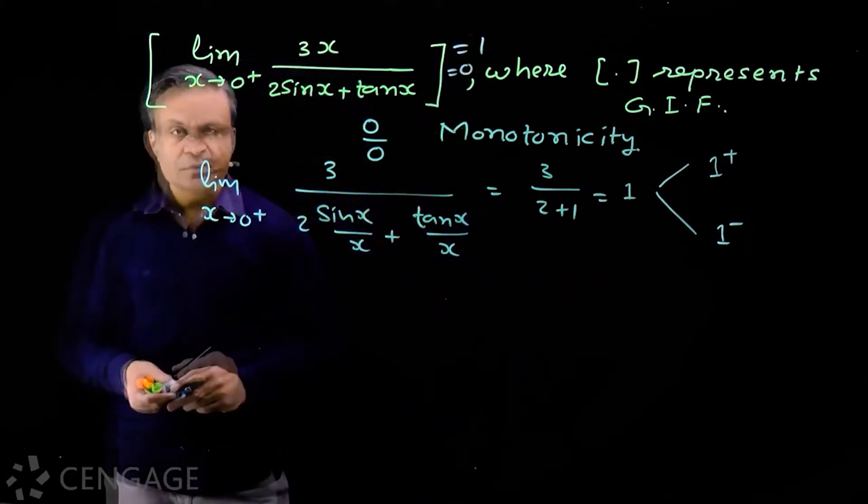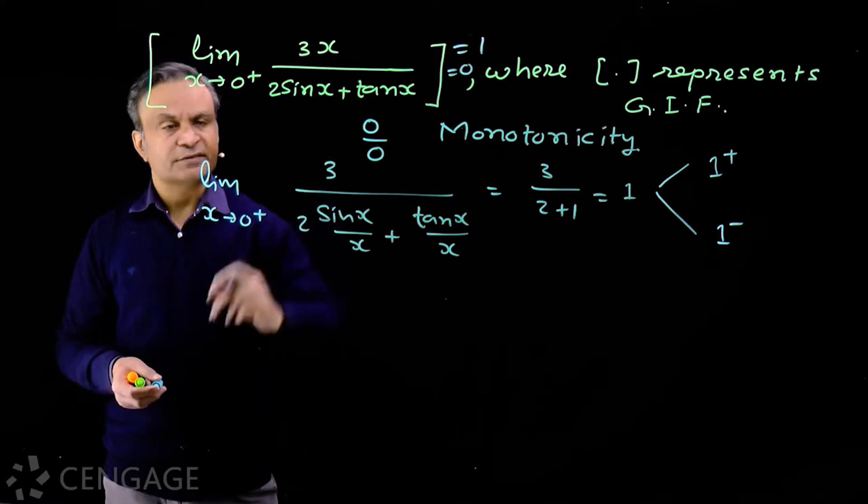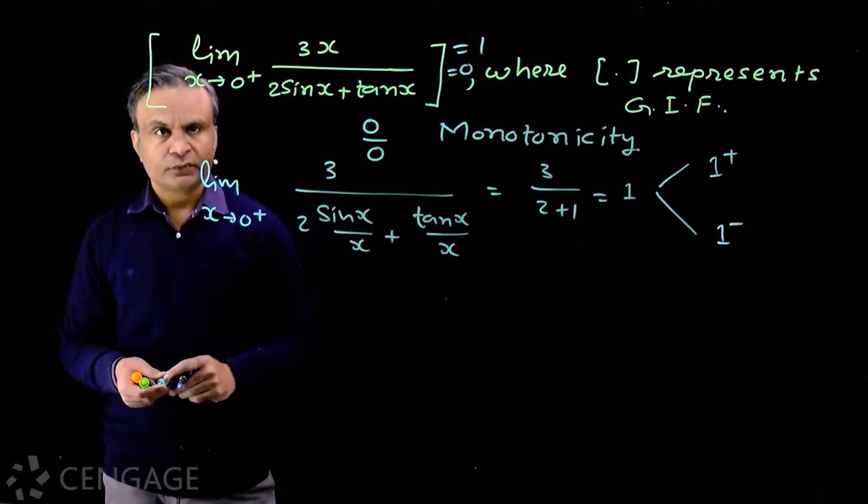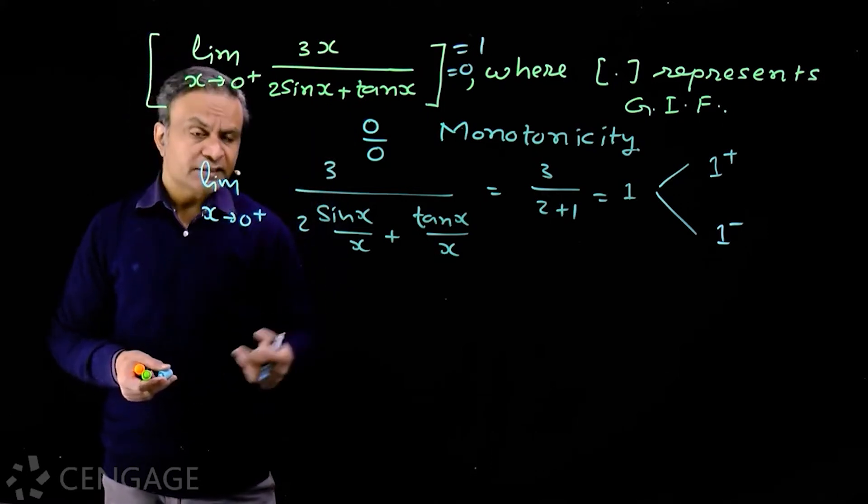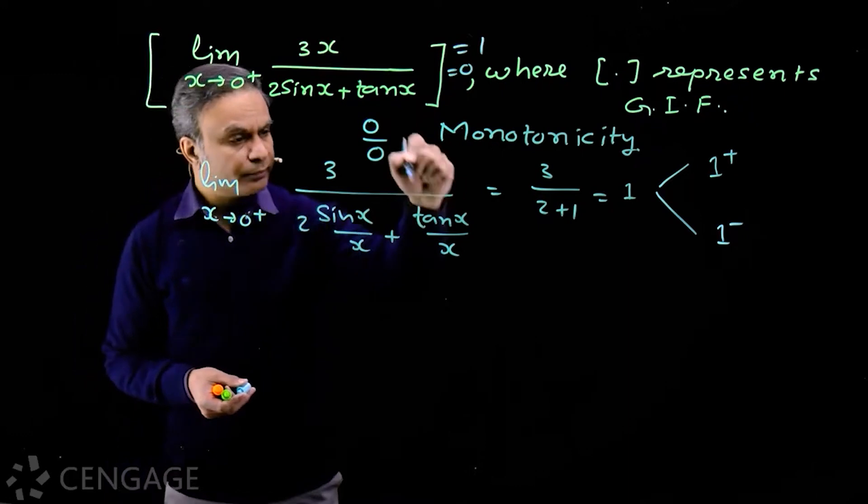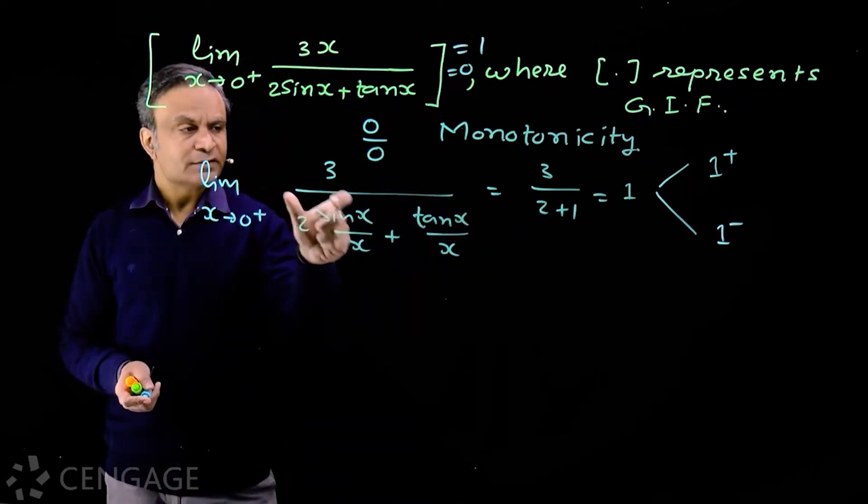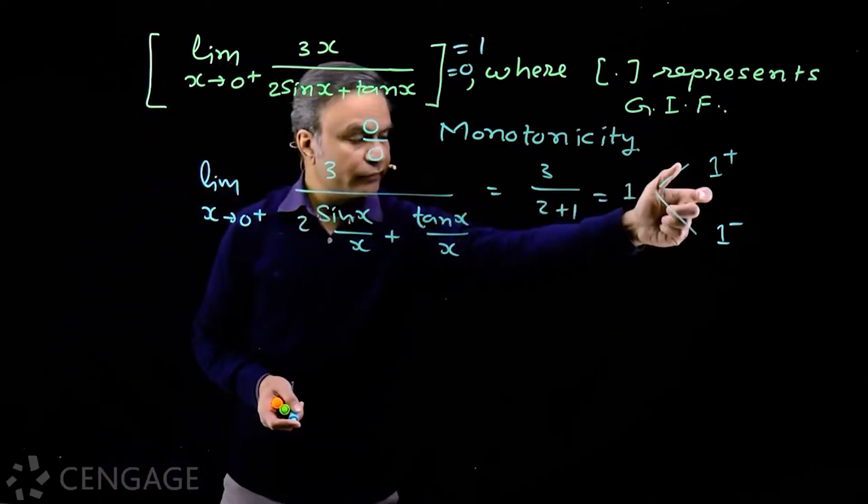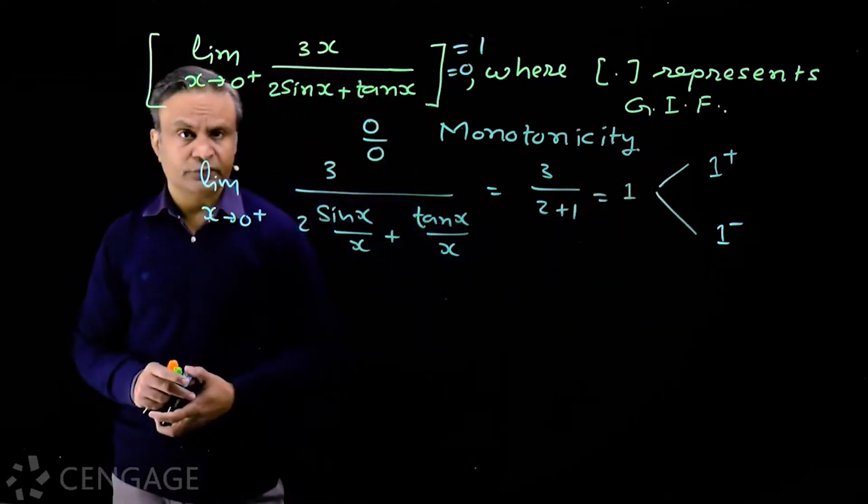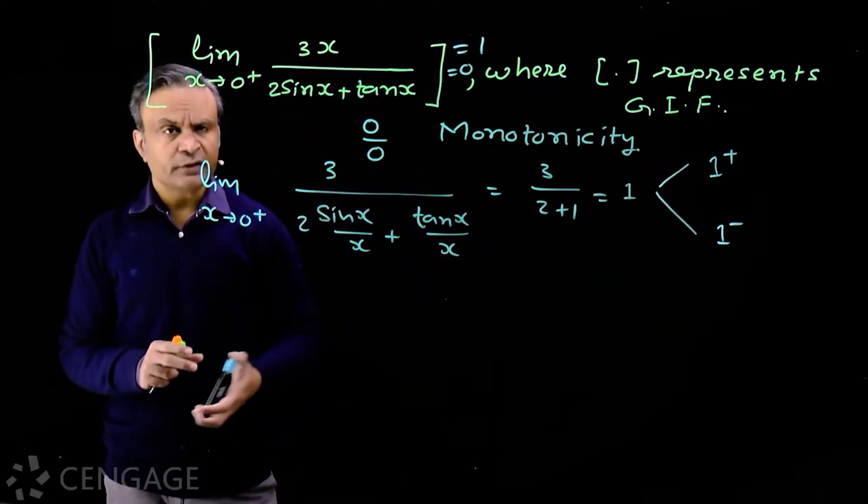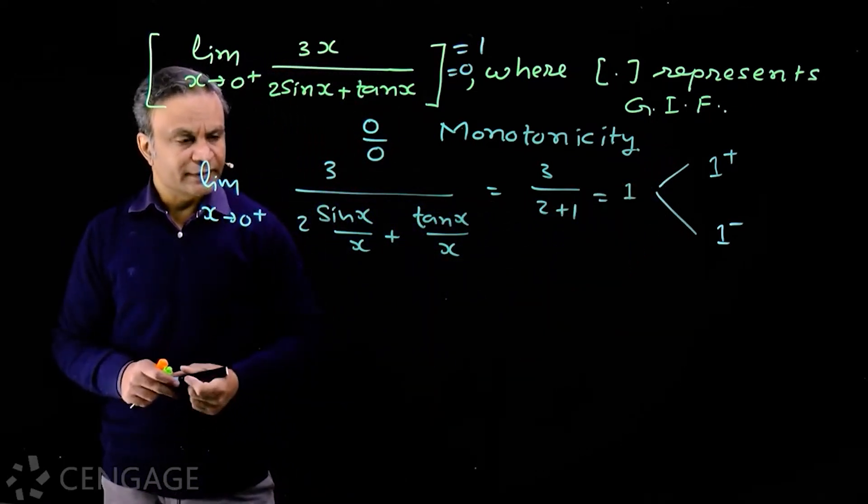So here we have very sensitive value. How to check this limiting value is slightly more than 1 or slightly less than 1? It is difficult to decide. The reason is: